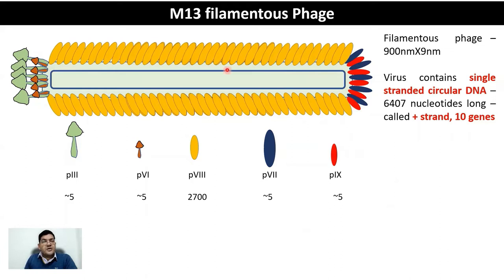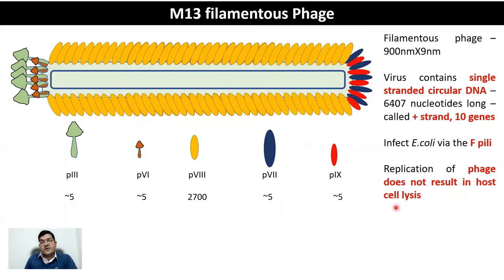The virus can infect E. coli via F pili. Replication of the phage does not result in host cell lysis. In contrast to Lambda phage, M13 infection does not result in cell death or cell lysis. The cell continues to live, however, with a slightly different phenotype and metabolism.